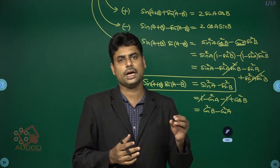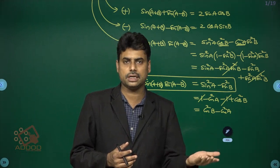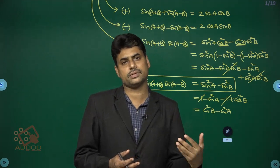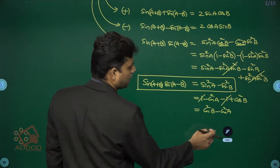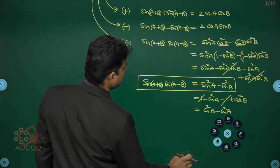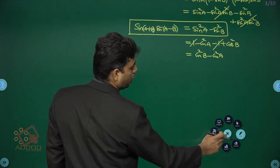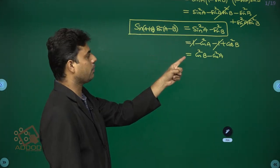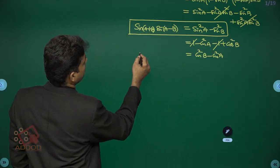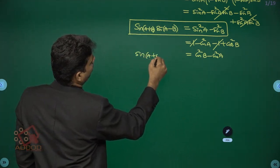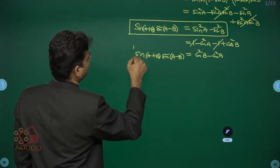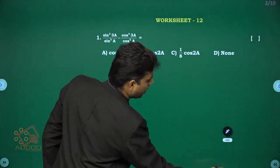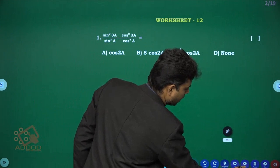The product cos(a+b)·cos(a-b) = cos²a - sin²b, which is the same as cos²b - sin²a. These are important formulas for solving the questions in worksheet number 12.